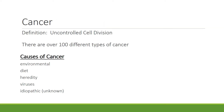Cancer is defined as uncontrolled cell division. The cells do not know when to stop dividing. We know that there are more than 100 different types of cancer and the causes are varied.